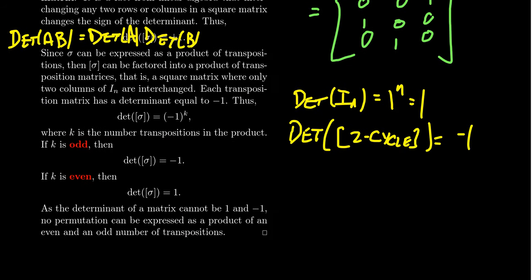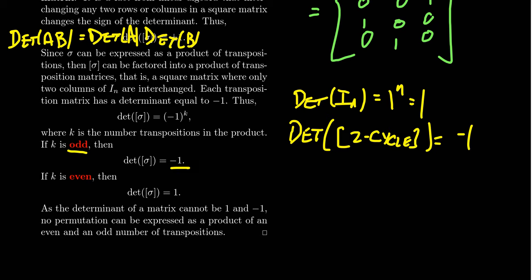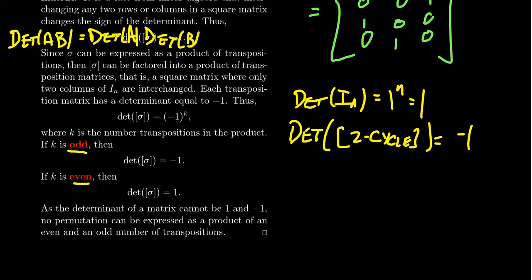If you have an odd number of transpositions, you get (-1) to an odd power, which is negative one. If you have an even number of transpositions, you get (-1) to an even power, which is one. Since the determinant cannot be both one and negative one, it has to be one or the other — so the factorization is either odd or even, and every even factorization gives one while every odd gives negative one.